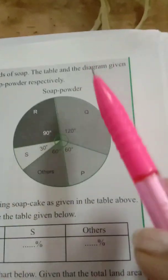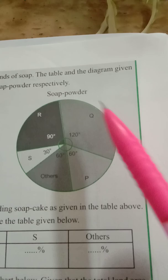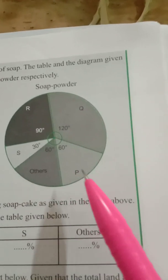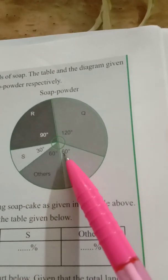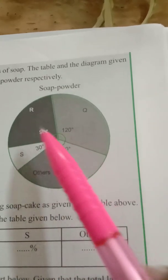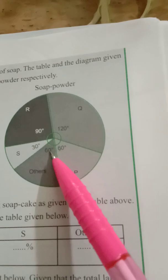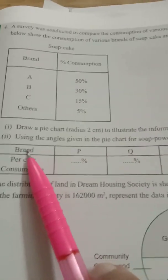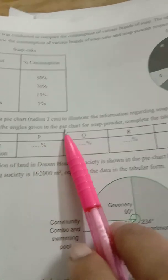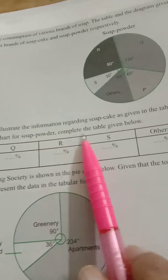Now we move on to the second part. Coming to soap powder, they have already given you the pie graph. Let's read the pie graph: P brand 60 degrees, Q brand 120 degrees, R brand 90 degrees, S brand 30 degrees, and others is 60 degrees.